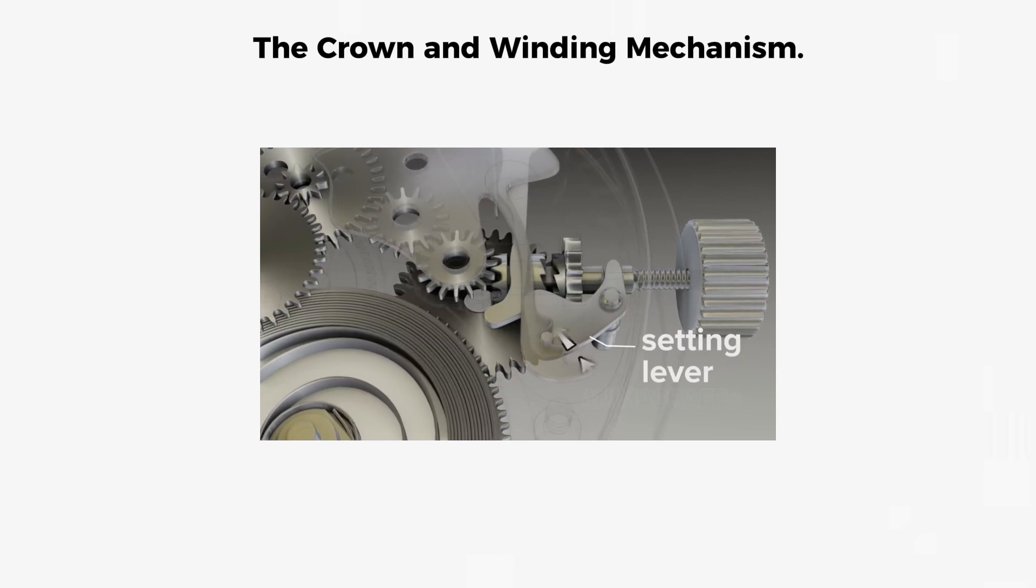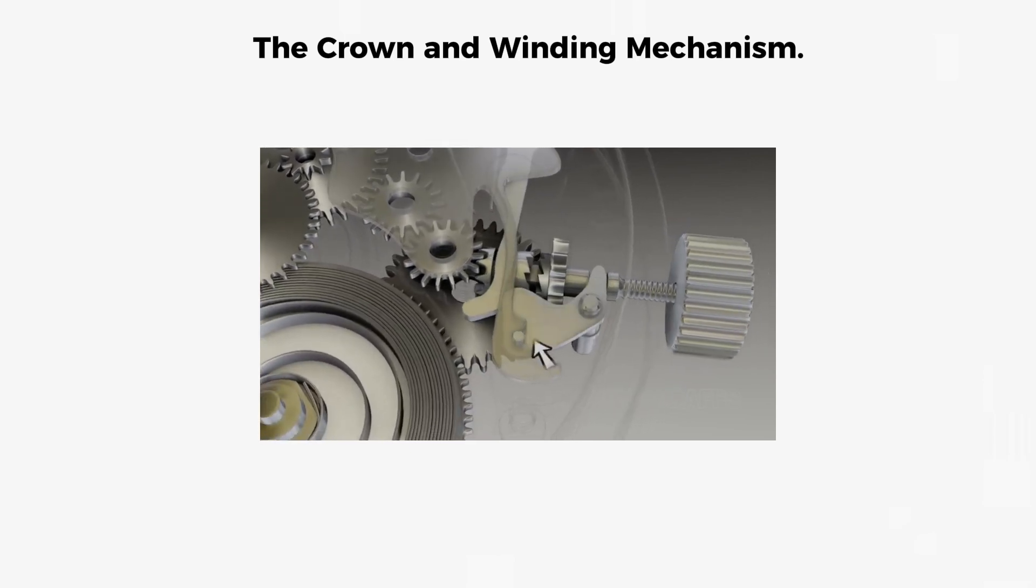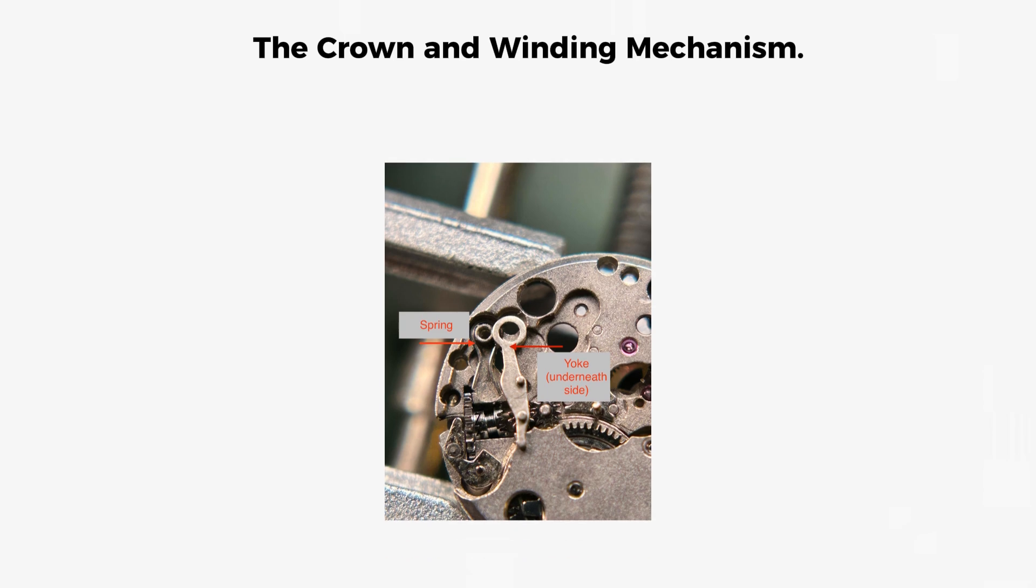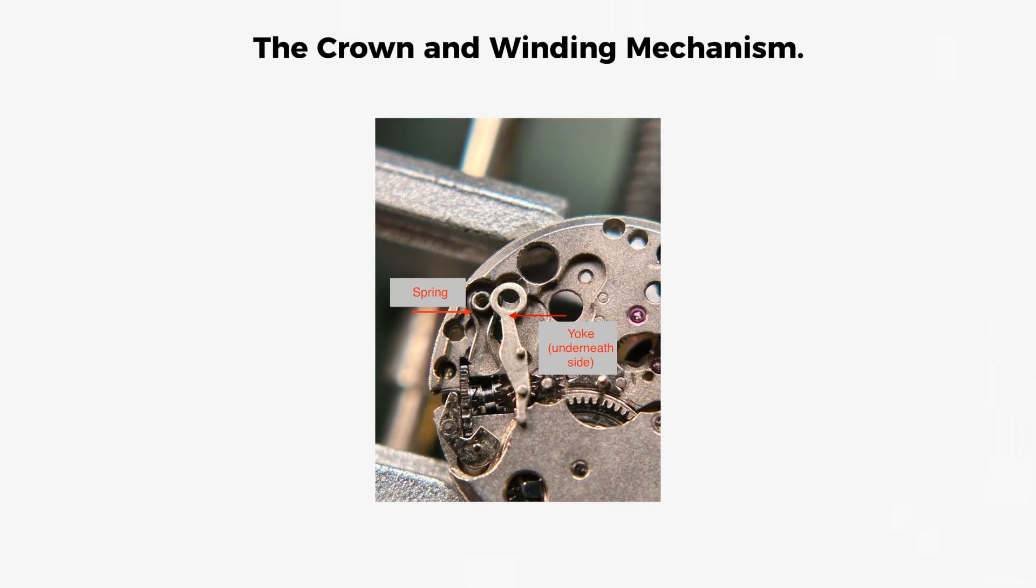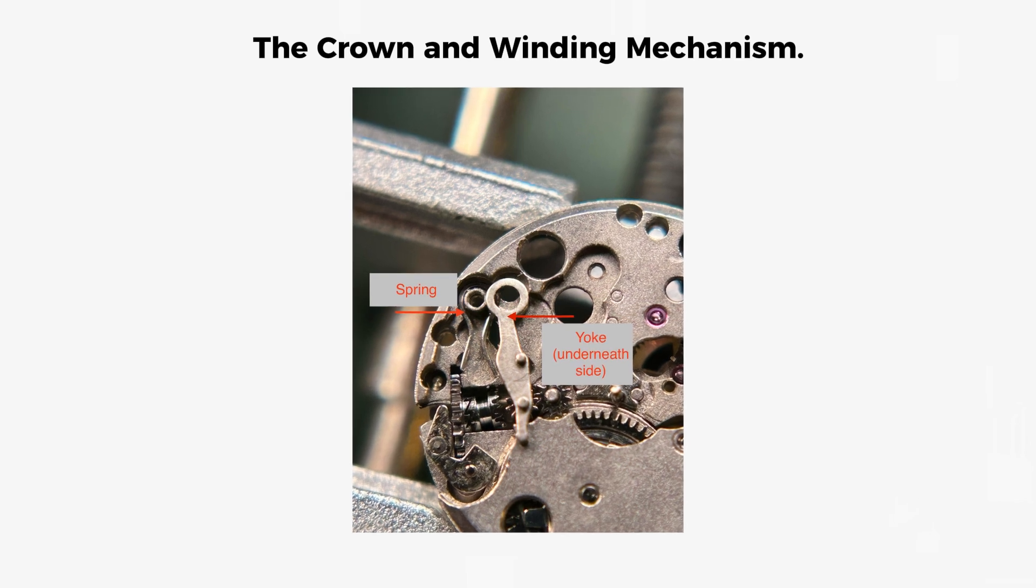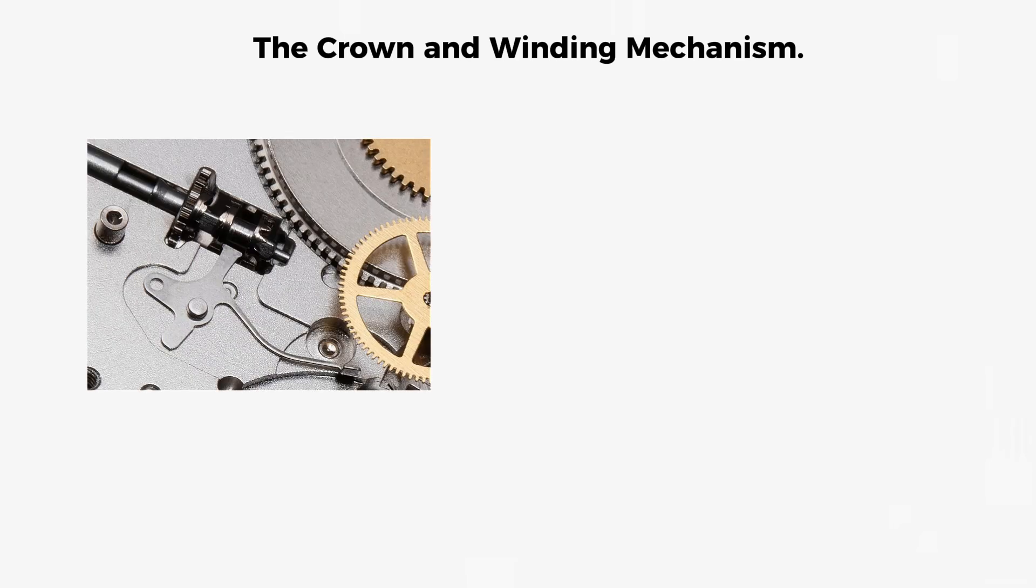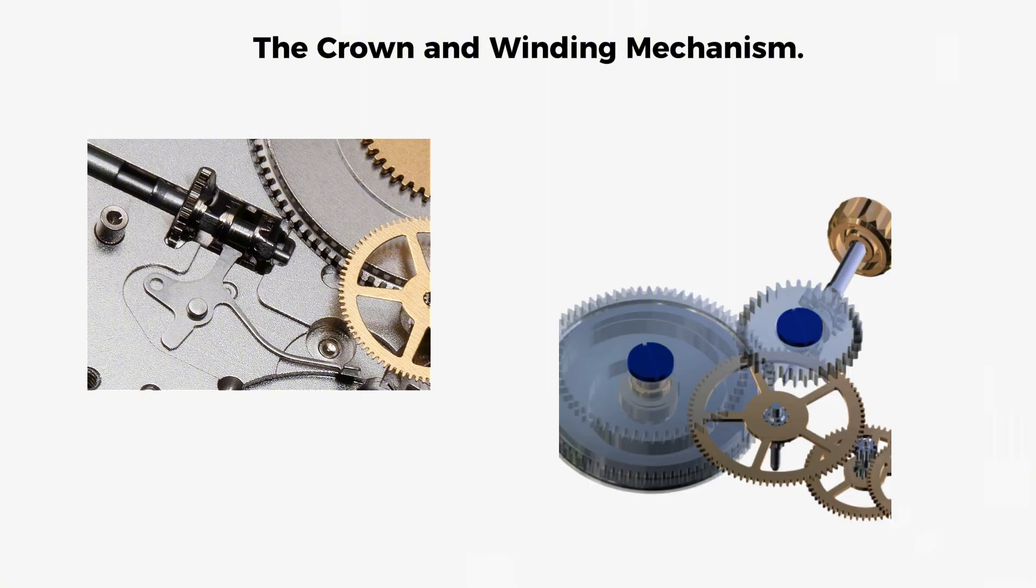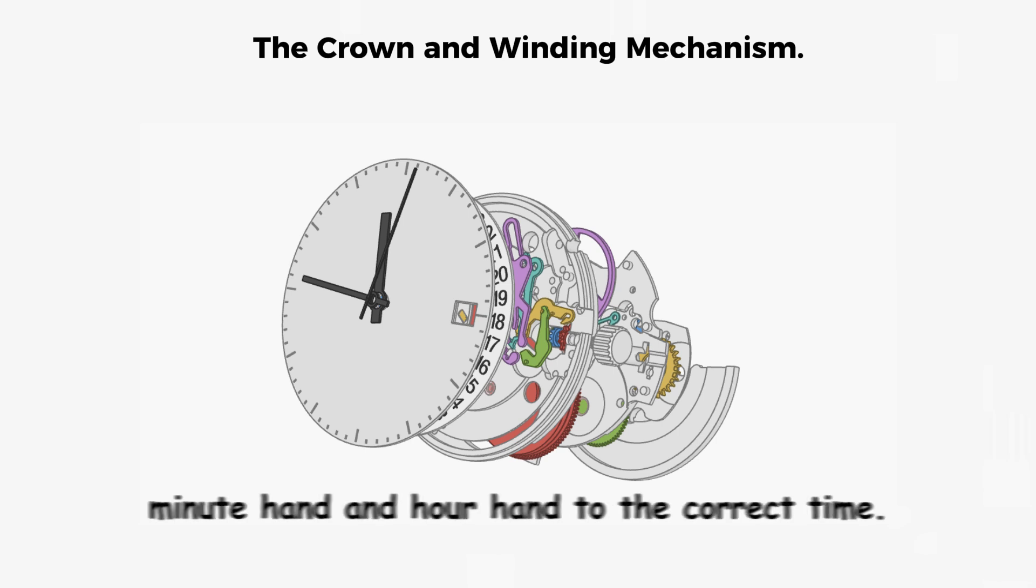When the crown is pulled outward, the setting lever clicks into the second indent on the setting jumper. At the same time, this lever presses against the spring-loaded yoke, which physically moves the sliding pinion out of connection with the winding gears and into connection with the time setting gears. Now, turning the crown rotates the minute wheel in the motion works, which moves both the minute hand and hour hand to the correct time.